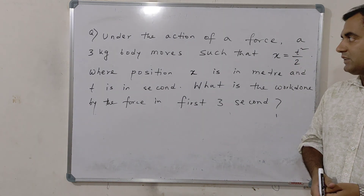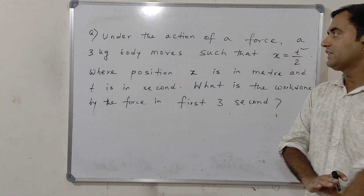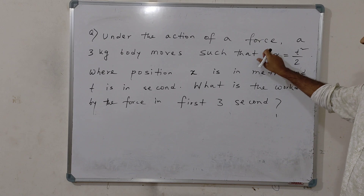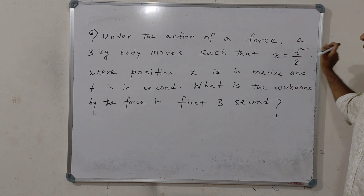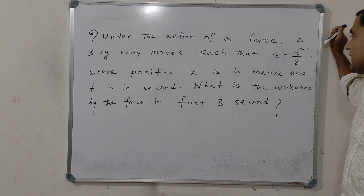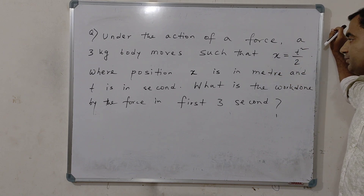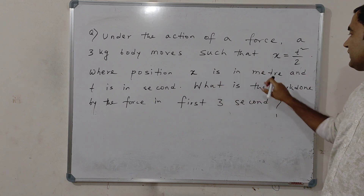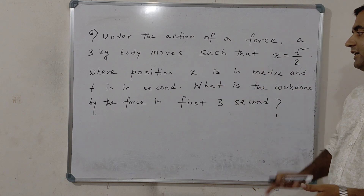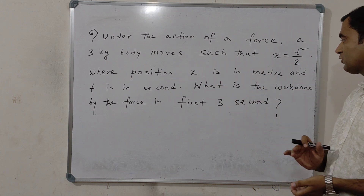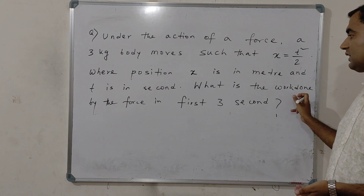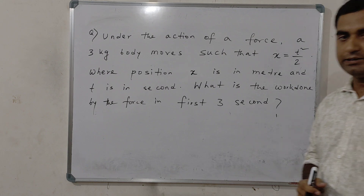Now, the first numerical: under the action of a force, a 3 kg body moves such that x is equal to t squared by 2, where position x is in meters and t is in seconds. We have to find out the work done in the first 3 seconds.